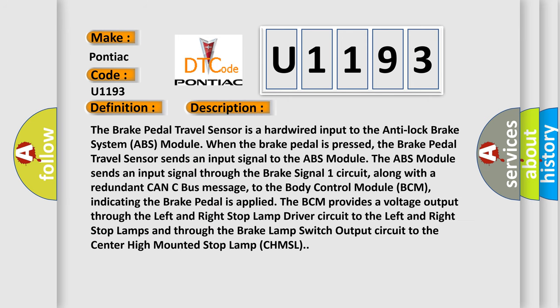The brake pedal travel sensor is a hardwired input to the anti-lock brake system (ABS) module. When the brake pedal is pressed, the brake pedal travel sensor sends an input signal to the ABS module. The ABS module sends a signal through the brake signal one circuit, along with a redundant CAN-C bus message, to the body control module (BCM), indicating the brake pedal is applied. The BCM provides a voltage output through the left and right stop lamp driver circuit to the left and right stop lamps, and through the brake lamp switch output circuit to the center high mounted stop lamp (CHMSL).